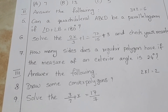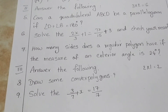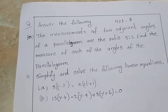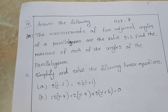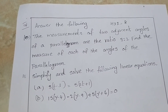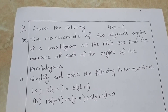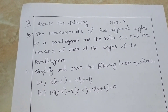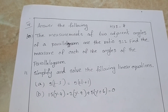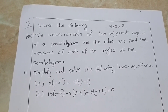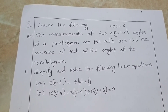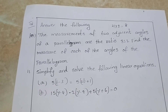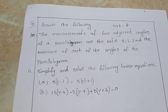Answer the following — draw some polygons. Solve: 3/7 plus x equals 17/7. Answer the following: the measurements of two adjacent angles of a parallelogram are in a ratio — find the measures of each angle of the parallelogram. Simplify and solve the following linear equations: 3(t minus 3) equals 5(2t plus 1); 15(5 minus 4) minus 2(y minus 9) plus y plus 6 equals 0.